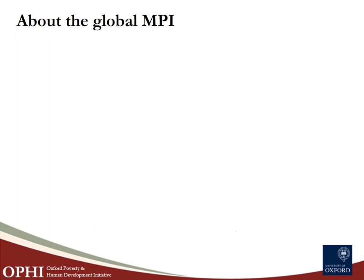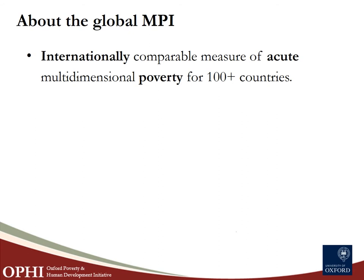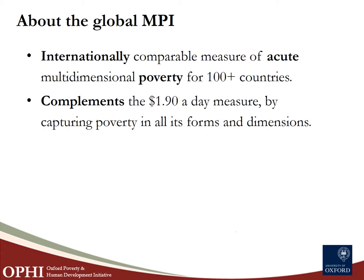So what is the Global MPI? It is a quantitative assessment of the state of multidimensional poverty in the developing regions of the world. The measure is implemented using internationally comparable multi-topic household surveys for well over 100 countries, which are home to 90% of the population living in the developing regions. Many governments tend to measure poverty using a monetary approach, but a multidimensional measure matters because it complements any monetary measure, including the $1.90 a day poverty line by the World Bank, and goes beyond a single dimension.